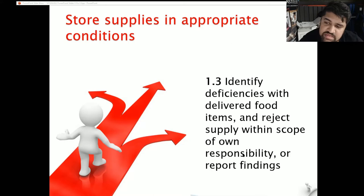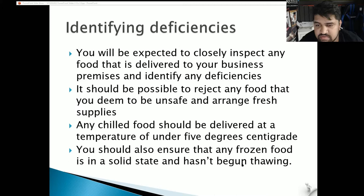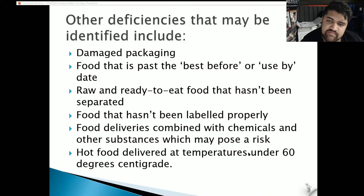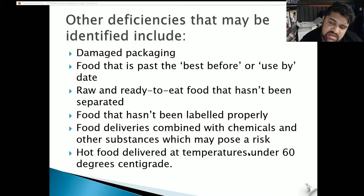1.3: Identify deficiencies with delivered food items and reject supply within scope of responsibility or report findings. You will be expected to closely inspect any food delivered to your premises. It should be possible to reject food you deem unsafe and arrange fresh supplies. Any chilled food should be delivered at under 5 degrees Celsius, and frozen food should be in a solid state and not begun thawing. Other deficiencies include damaged packaging, food past its best-before or use-by date, raw and ready-to-eat food not separated, food not properly labelled, and food delivered with chemicals.